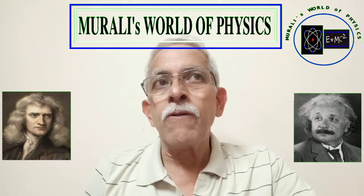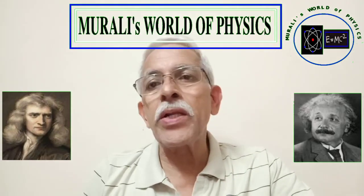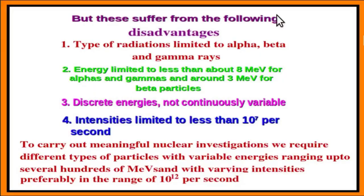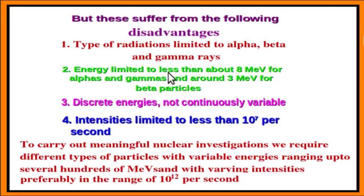In the early days, natural sources of radiations or particles were used for nuclear physics investigations, but such sources suffer from some disadvantages. First, radioactive sources emit only limited types of particles, namely alpha, beta, and gamma rays. Second, the energies of these radiations are limited to less than about 8 MeV for alphas and gammas and around 3 MeV for beta particles. Third, apart from the beta particles which have a continuous energy distribution, the other two types have discrete energies and are not continuously variable.